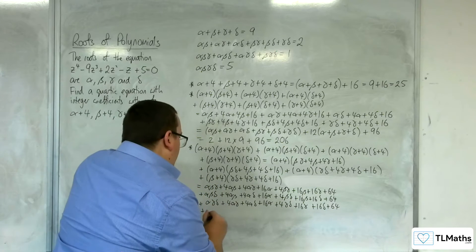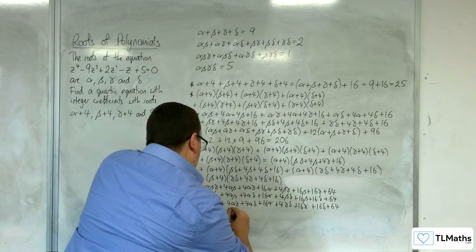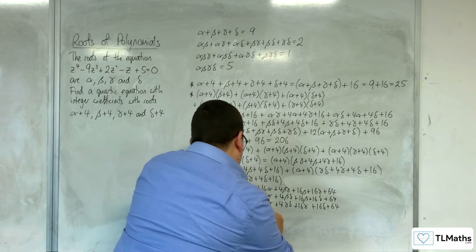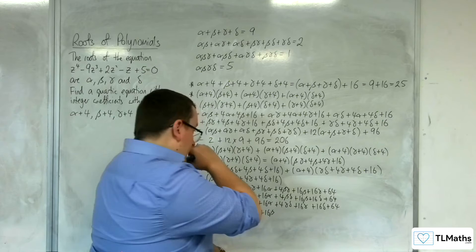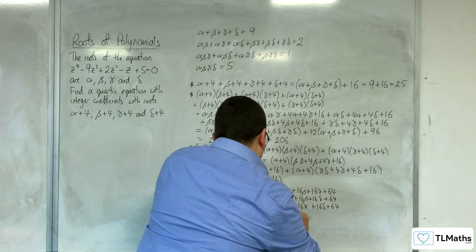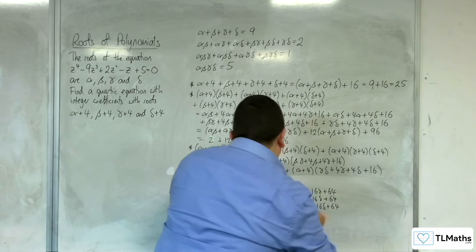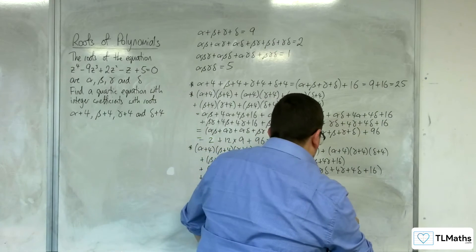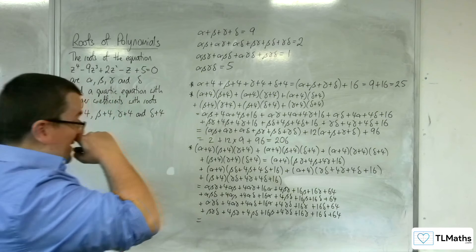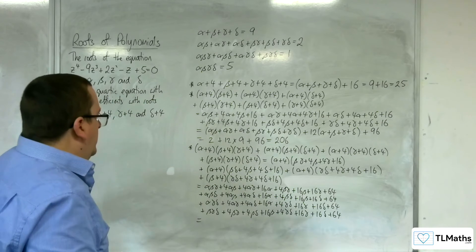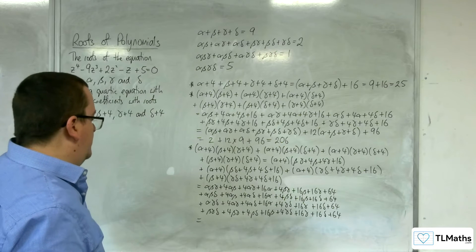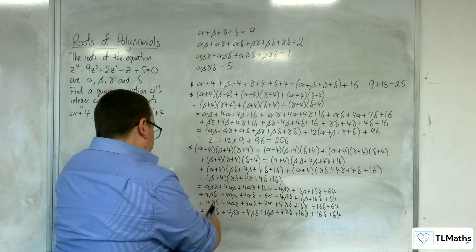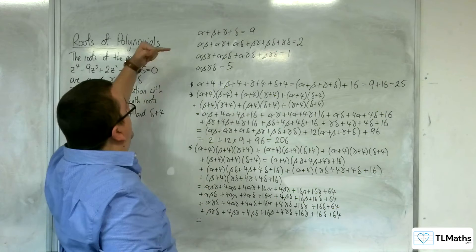For the fourth triple: beta·gamma·delta + 4·beta·gamma + 4·beta·delta + 16·beta + 4·gamma·delta + 16·gamma + 16·delta + 64. Now grouping: the degree-3 terms alpha·beta·gamma + alpha·beta·delta + alpha·gamma·delta + beta·gamma·delta — we know that equals 1.